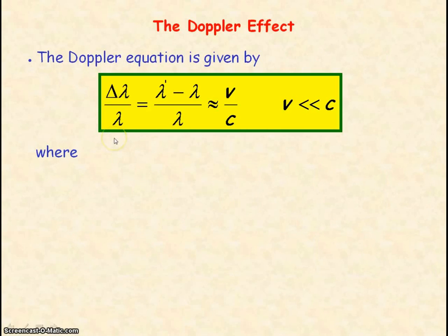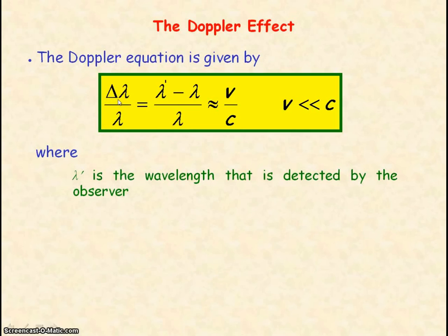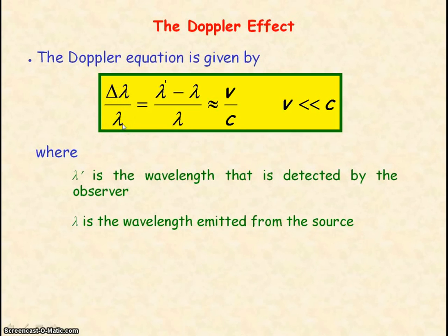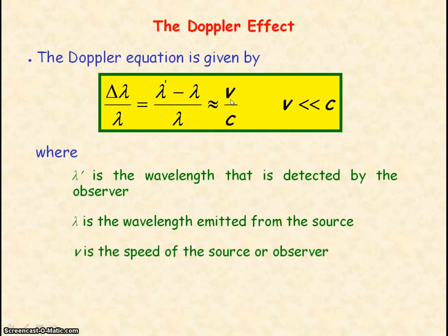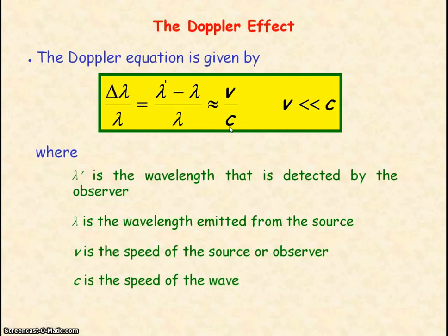The Doppler equation is given by the fractional change in wavelength — that is the change in wavelength, the Doppler shift, divided by the original wavelength emitted from the source — which is approximately equal to the speed of the source or observer relative to each other divided by C, the speed of the wave. This equation applies when V is much, much less than C, so the speed of the observer or source is much less than the speed of the wave.